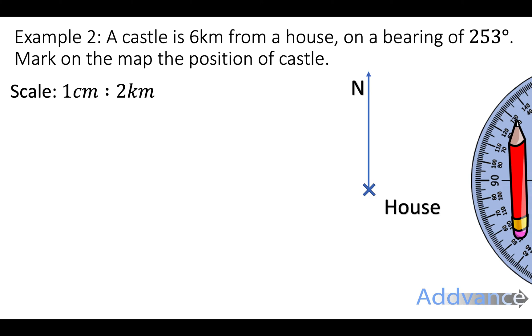Now the question, example two: a castle is 6 kilometers from a house on a bearing of 253 degrees. Mark on the map the position of the castle. Well, it shows us our scale, which is 1 centimeter represents 2 kilometers. So every 1 centimeter represents 2 kilometers, and you can work out how far 6 kilometers is from that.